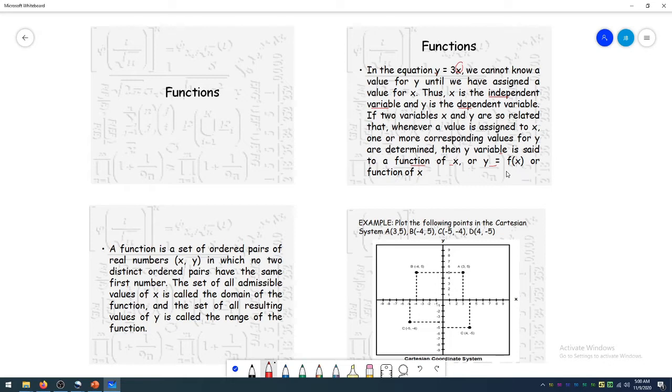A function is a set of ordered pairs of real numbers (x, y) in which no two distinct ordered pairs have the same first number. The set of all admissible values of x is called the domain. So all the values of x is the domain of the function. And the set of all resulting values of y is called the range of the function.